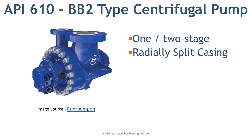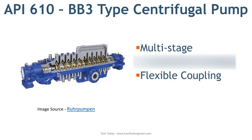Next is BB3 type pump. A multi-stage between bearing pump with axial split casing design is designated as an API BB3 type pump. This pump uses an accessible coupling to connect the driver.